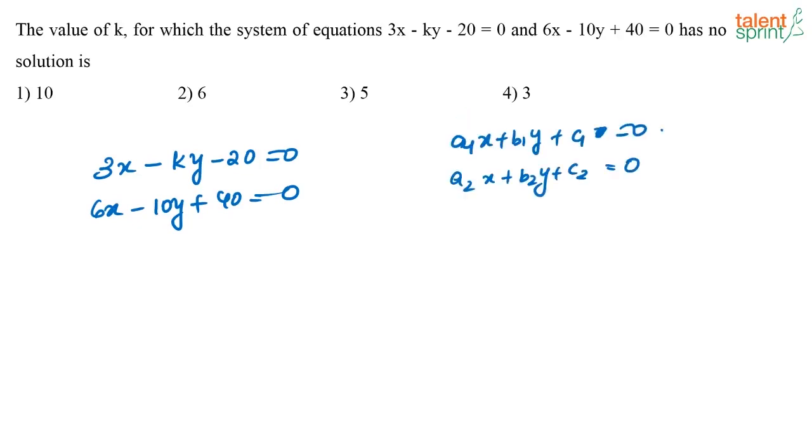If you have two linear equations of this general form, these two linear equations will have no solutions when A1/A2 equals B1/B2 and this is not equal to C1/C2. If this condition is satisfied then this set of equations will have no solution.